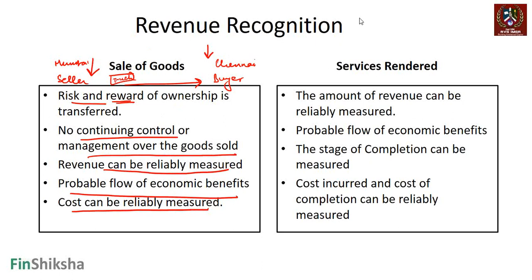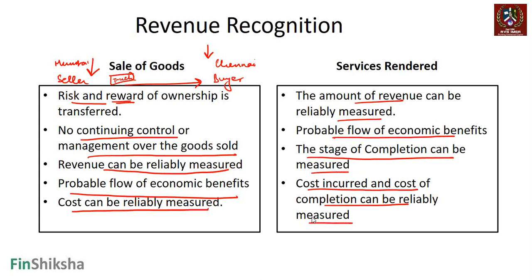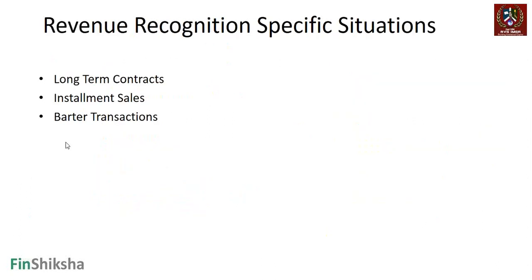In the case of services, revenue is considered earned if the amount of revenue can be reliably measured, if there is a probable flow of economic benefits, if the stage of completion can be measured, or if the cost incurred and the cost to completion can be reliably measured. We will take an example to explain stage of completion in the context of both services and sale of goods.